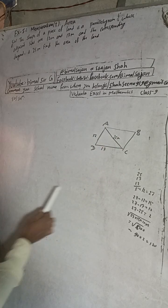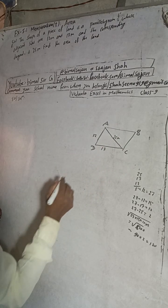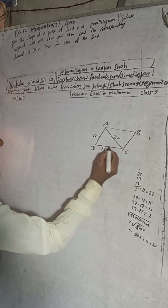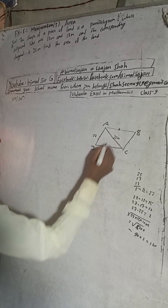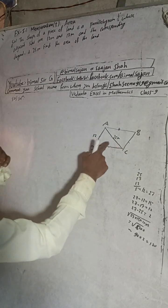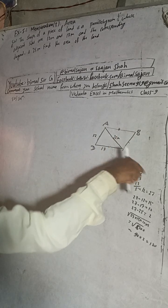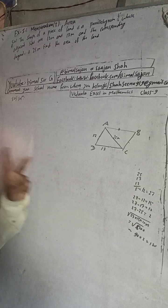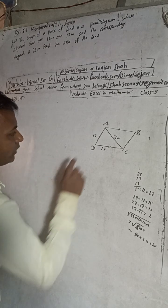Here this is a parallelogram, this is the shape of the land. In this parallelogram we should know the properties. This side is equal to this side and this side equals this side. When we find the area of this triangle and multiply by 2, we will get the area of the parallelogram because the diagonal bisects the parallelogram into two congruent triangles.